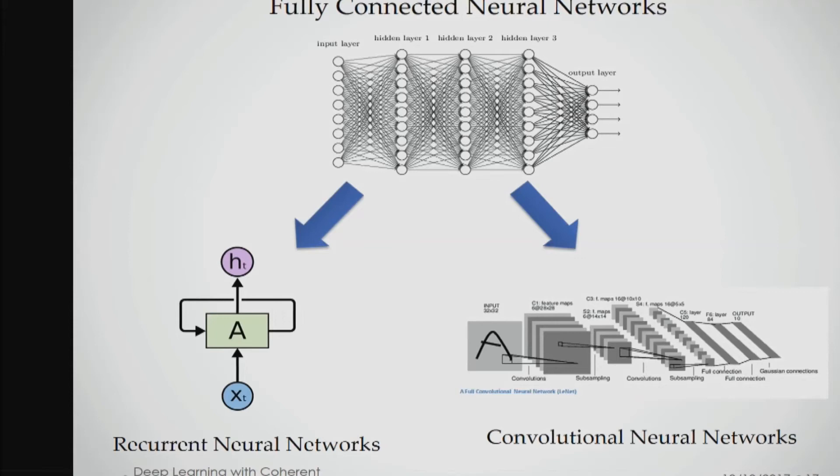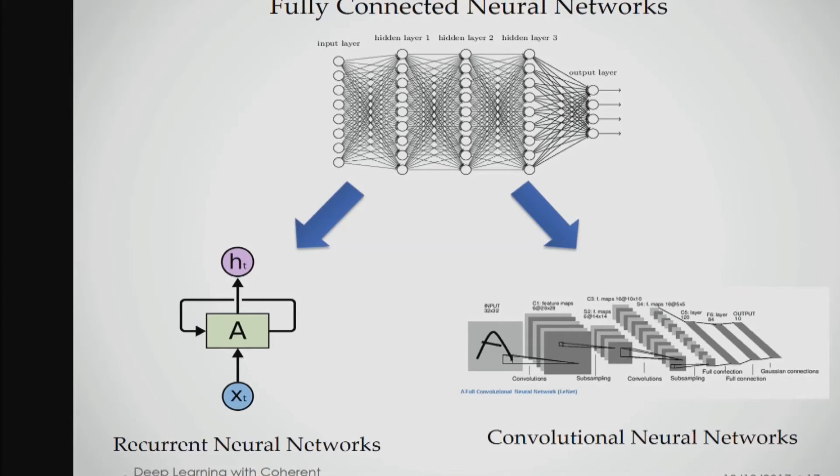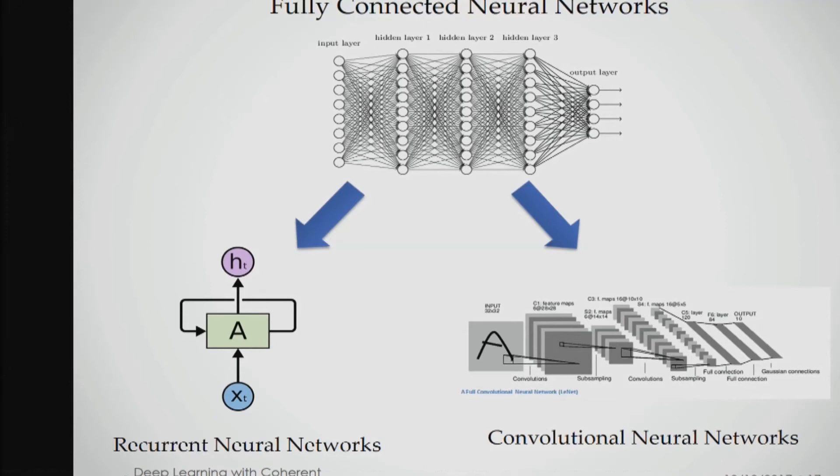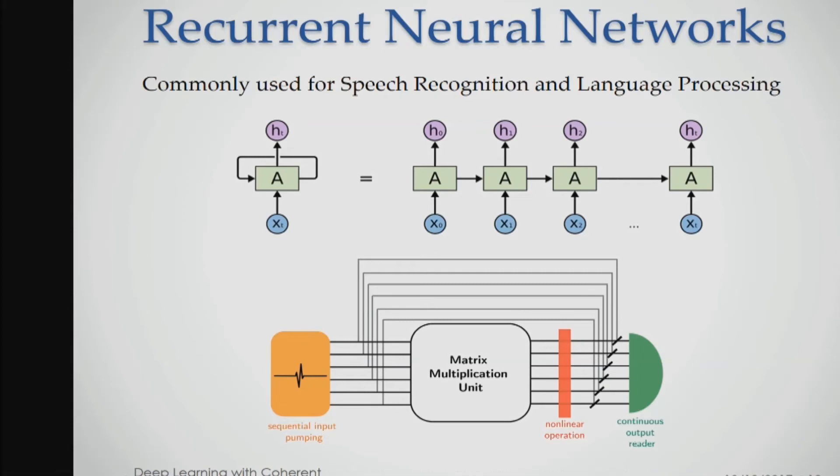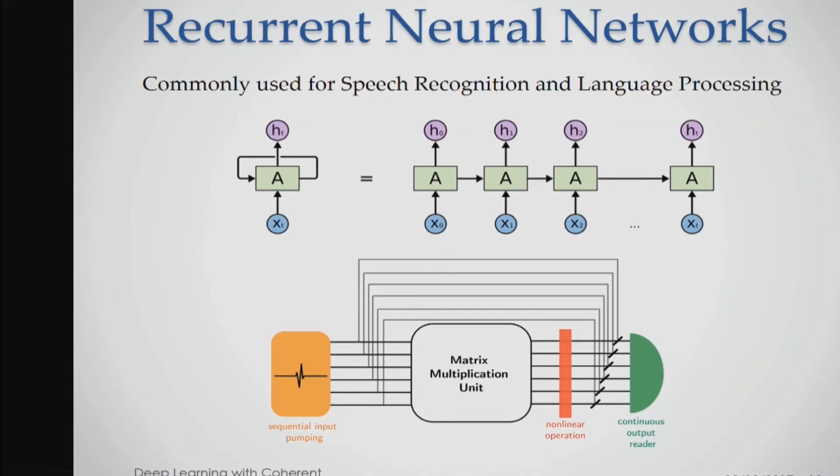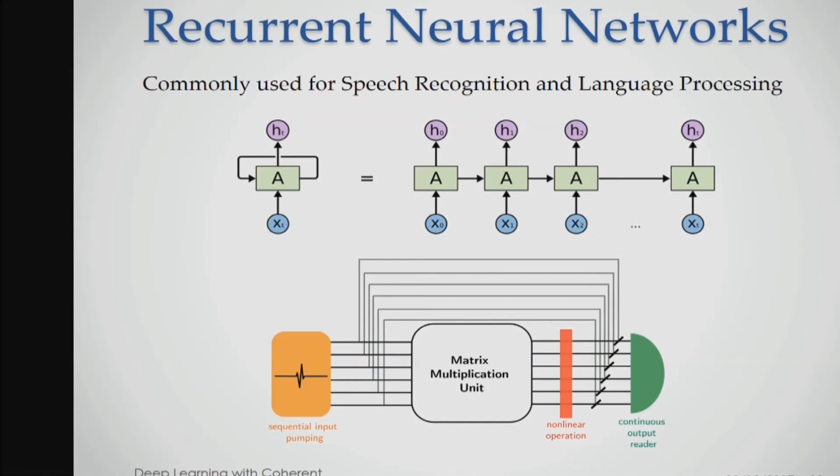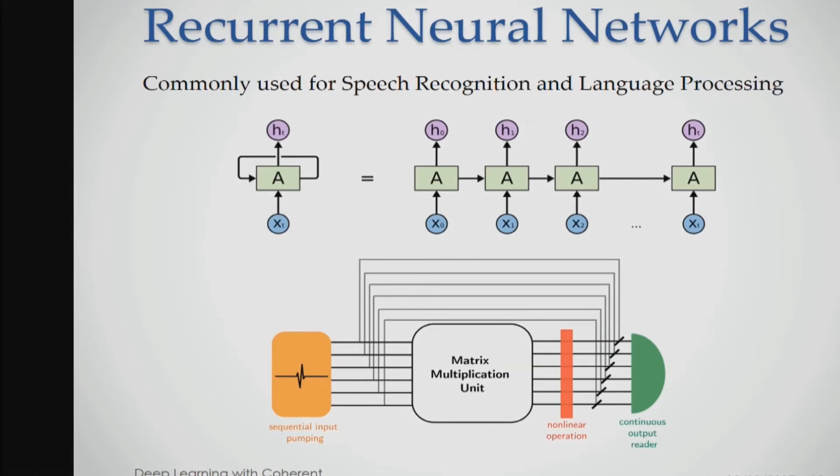What I talked about was fully connected neural networks. Now I'll briefly talk about what we're working on right now—making this more specialized for different tasks. For example, recurrent neural networks are commonly used for speech recognition and natural language processing. They're very friendly for nanocoherent circuits. Your speech voice signals come in, encoded into analog domain, pass through a matrix multiplication unit with around 1,000 neurons. You have a beam splitter to send the signal back. At the end, you detect what word you speak or the translation of the input signals.